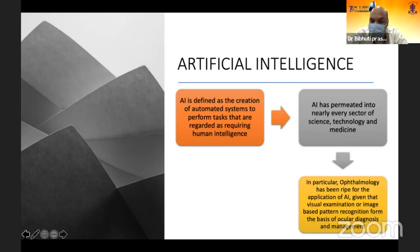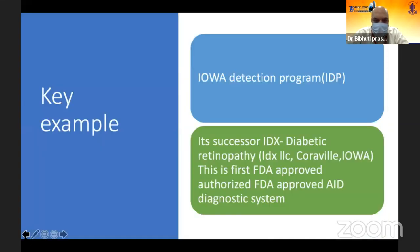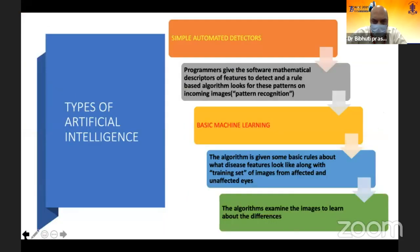It is also very important that in ophthalmology, visual examination or image pattern-based recognitions form the basis of ocular diagnosis, and that is the same thing that is applied to artificial intelligence. So it is very pertinent to be used in ophthalmological practices. Some key examples are IOP detection programs and their successes, like diabetic retinopathy, which is also the first FDA-approved AI diagnostic system.